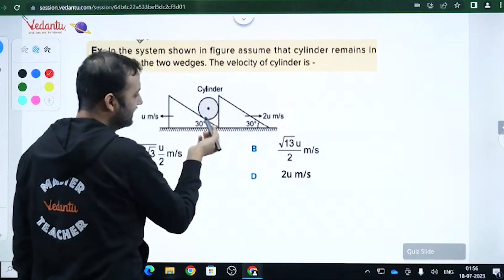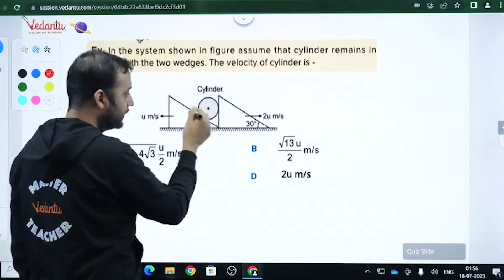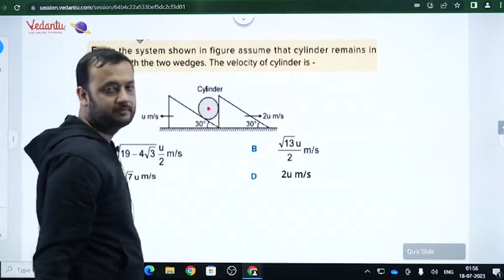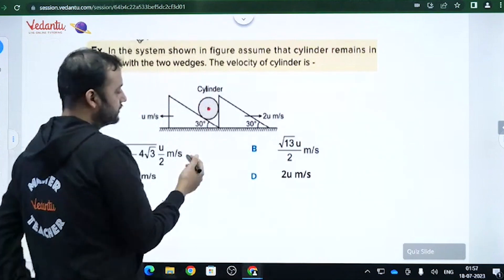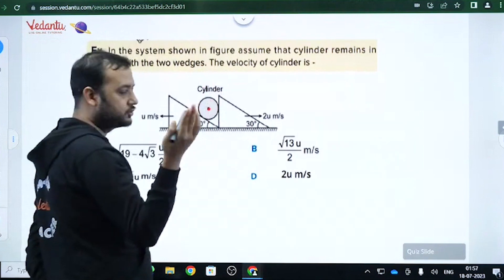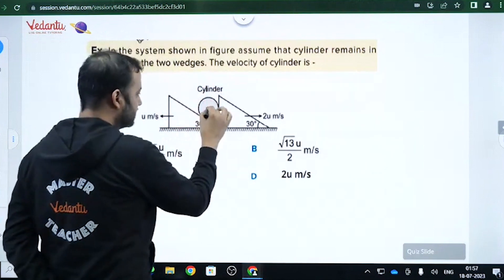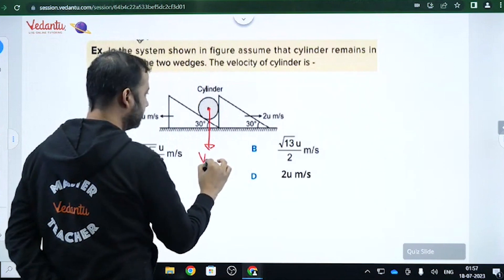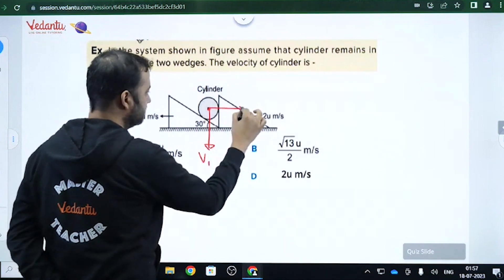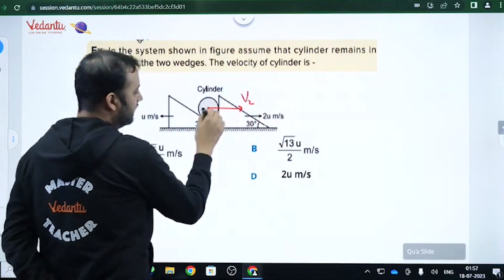So basically the cylinder will have some velocity. This point on the cylinder will have the velocity in the screen plane only. The cylinder cannot come towards you or go inside. So let's say this velocity is v1 and let's say this velocity is v2.